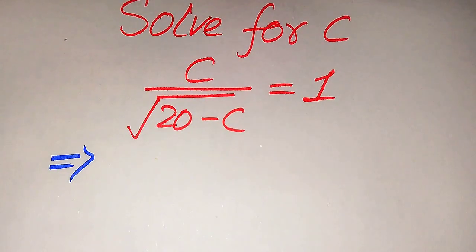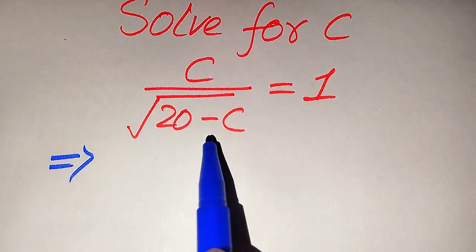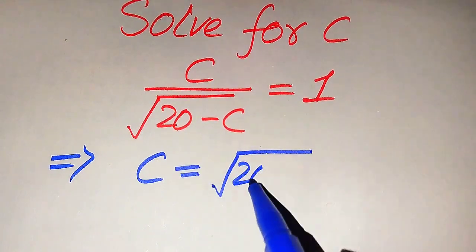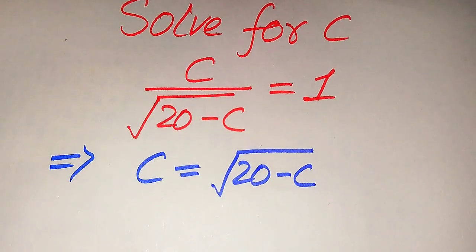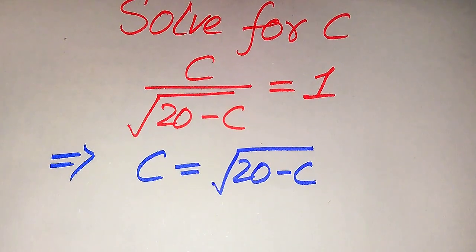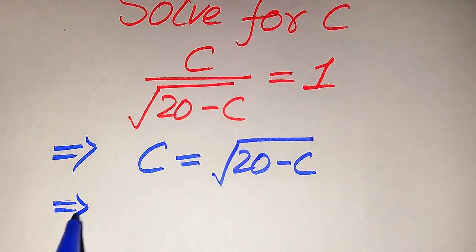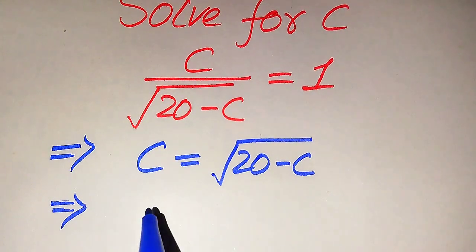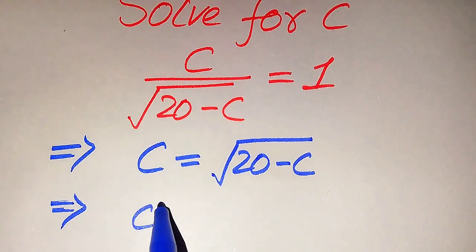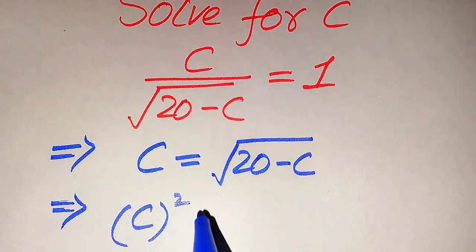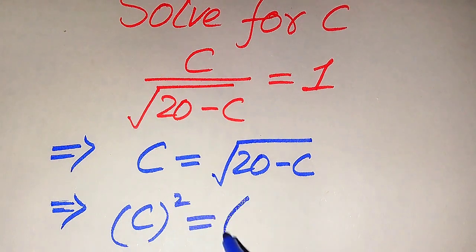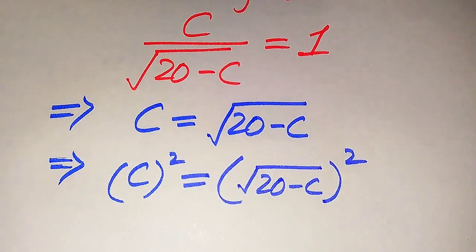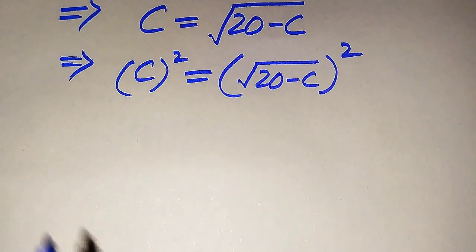Now we move toward the solution. We move the square root of 20 minus C to the right hand side, so it is written as C equals the square root of 20 minus C. We need to remove the square root sign from the right hand side, so we take squaring on both sides. It becomes C squared equals the square root of 20 minus C, whole squared.